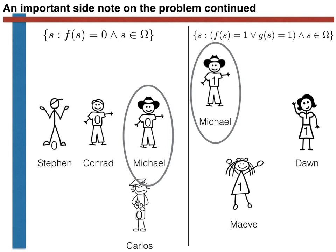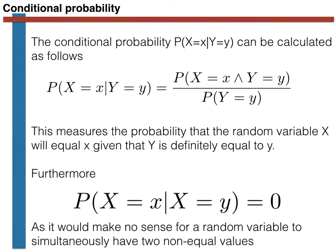These digressions aside, the point of this video is to define conditional probability. We have seen a simple example of how this quantity is calculated in practice. In future videos, we will always define the conditional probability that X equals x, given that Y equals y, as the probability that X equals x and Y equals y, divided by the probability that Y equals y. We should further note that the conditional probability is obviously 0 unless x equals y, as it makes no sense for a random variable to have two different numerical values simultaneously.